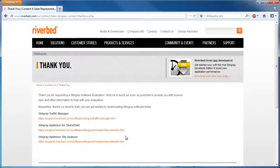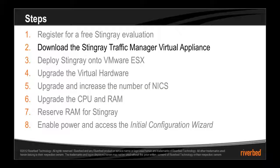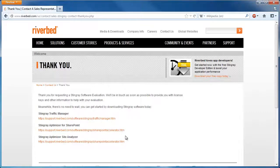Along with access to Stingray technical support. While we wait for the evaluation key to arrive, we can go ahead and get started by downloading the software and installing it without the evaluation key in developer mode. In developer mode, Stingray is limited to 1 megabit per second of bandwidth throughput but can be upgraded later with the evaluation key when it arrives.